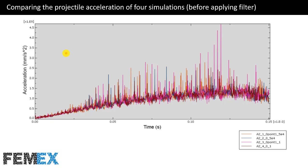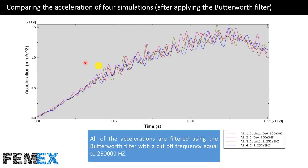Now I want to compare the projectile acceleration of the four simulations. Here you can see the acceleration before applying the filter, and here I have compared them after applying the Butterworth filter with a cutoff frequency of 250,000 Hz.